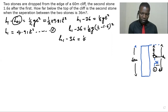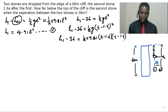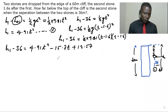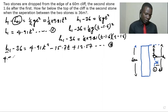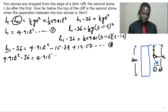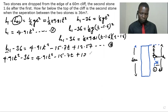Expanding (t minus 1.6) squared gives us (t minus 1.6)(t minus 1.6). This is equation two. We then substitute equation one into equation two, placing 4.91 t squared minus 36 equal to 4.91 t squared minus 15.70t plus 12.57.